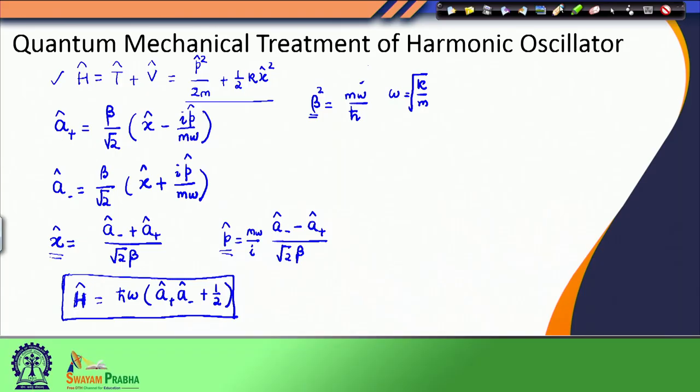Hello students, welcome to today's lecture. In the last lecture, we started our discussion on the problem of the harmonic oscillator. We discussed the kinetic energy, potential energy, and total energy of a classical harmonic oscillator, and then we started discussing the quantum mechanical harmonic oscillator, where m omega is brought out and we are left with the commutation of p and x, which is minus i h-bar.